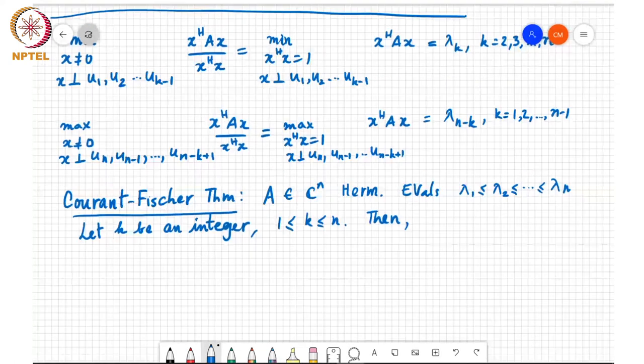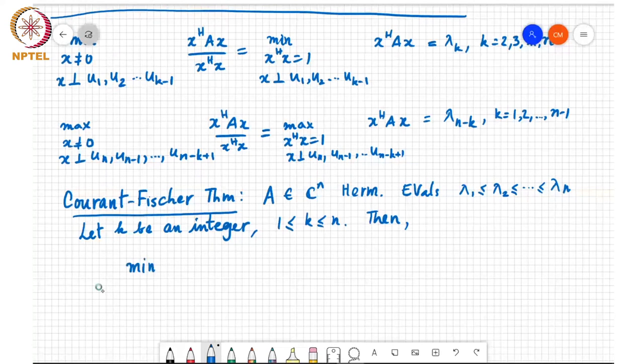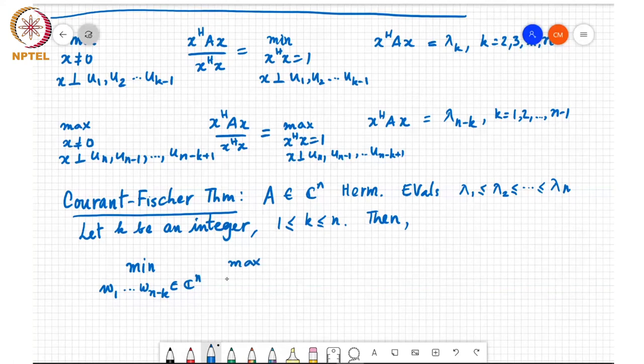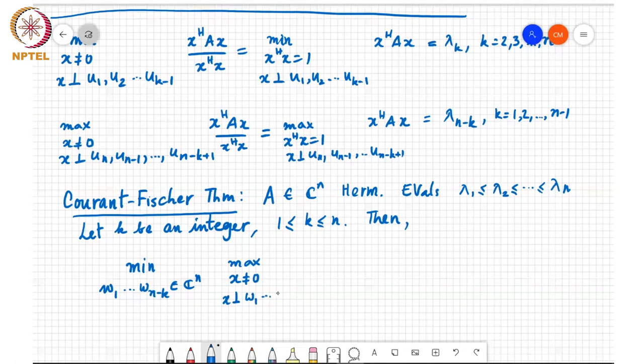there are two ways of writing lambda k. The first is a min-max formulation, the minimum over a set of vectors w1 up to w n minus k in C to the n, the maximum of x not equal to 0, x perpendicular to w1 through w n minus k of x-Hermitian Ax over x-Hermitian x is equal to lambda k.